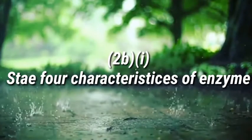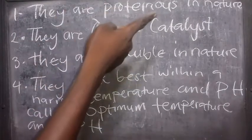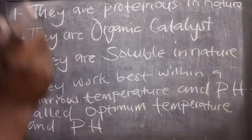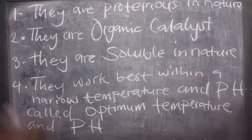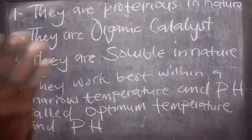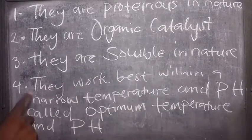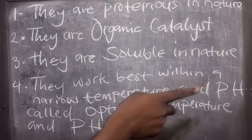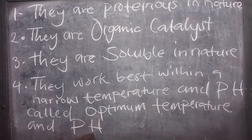Four characteristics of an enzyme: They are proteinous in nature. They are organic catalysts that speed up the rate of reaction. They are soluble in nature. They work best within a narrow range, within a narrow temperature and pH called optimum temperature and optimum pH.